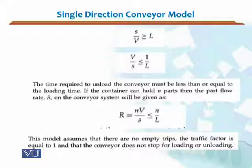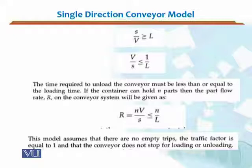If the container can hold n parts, then the part flow rate r on the single direction conveyor system is given by r = nv/s, where n represents the number of parts. This flow rate is bounded from above by n/l.